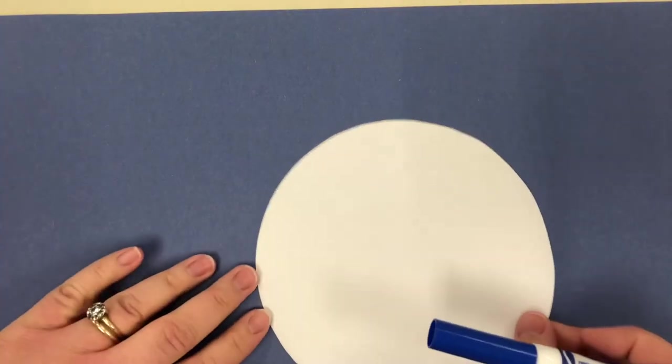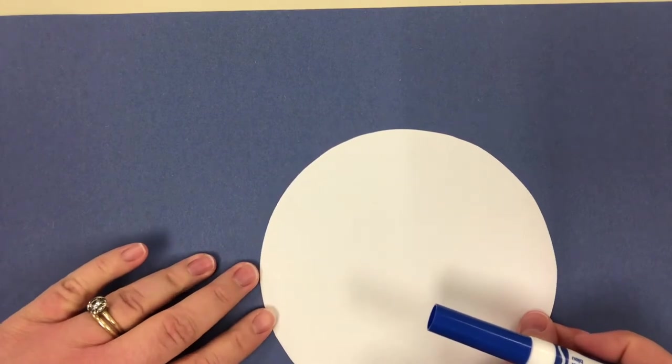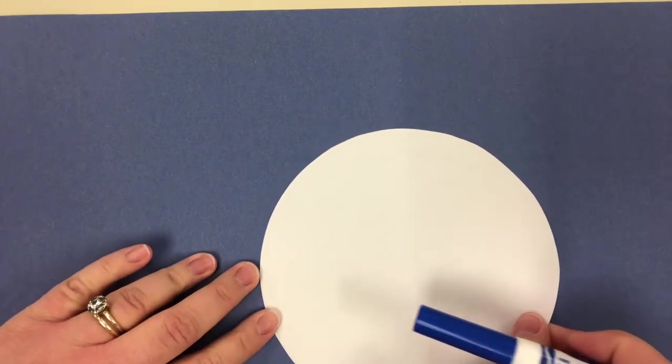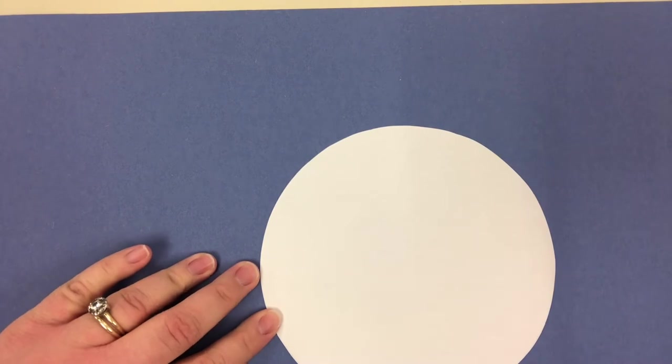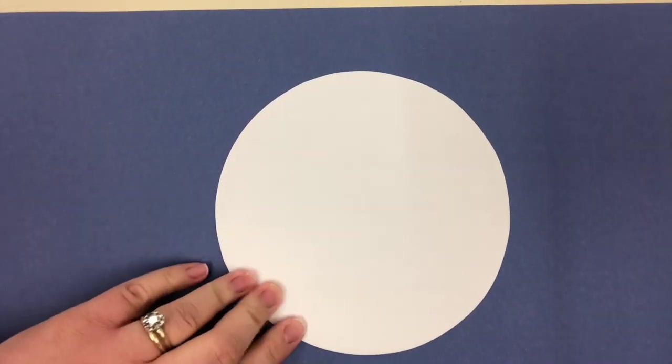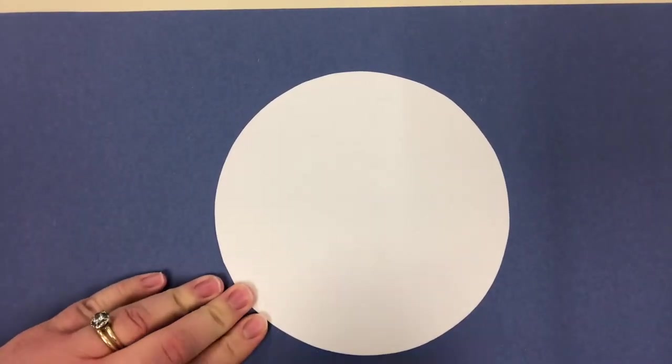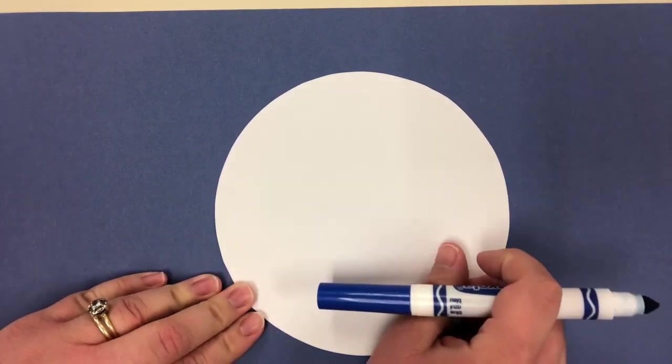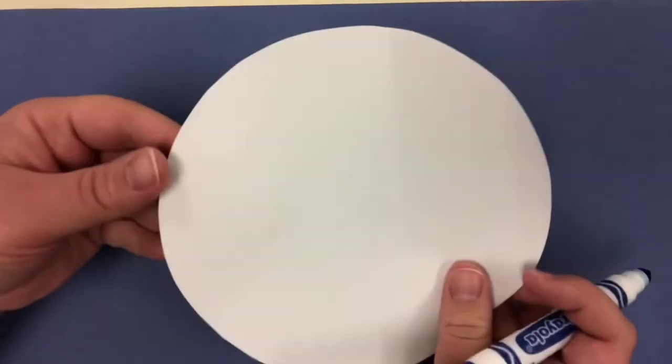First step is you're going to find something round to trace. I just traced a small bowl. So you would want to do that with pencil so you don't get marker all over the object that you're tracing. But you're going to find something small to trace. A regular size soup bowl would be fine. A lid to a coffee can. So find something to trace and cut out a circle. You're going to want to pause the video until you have your circle cut.